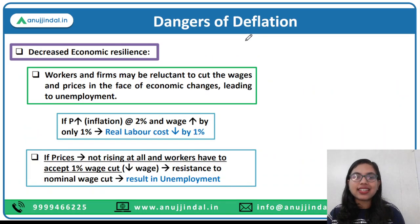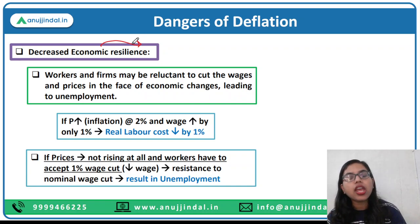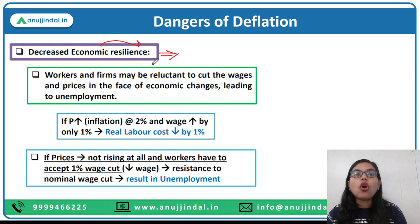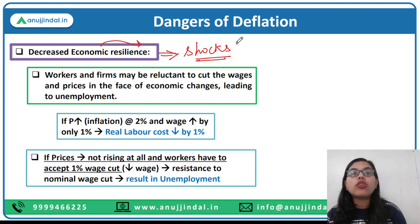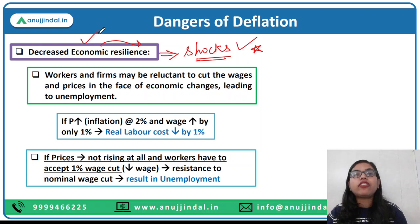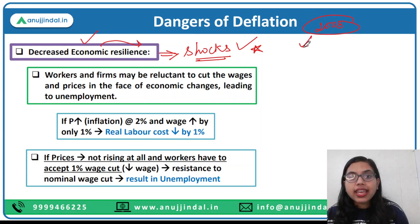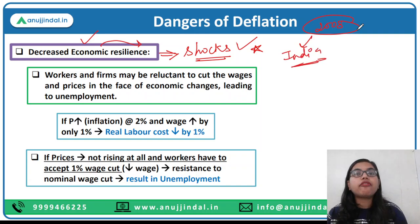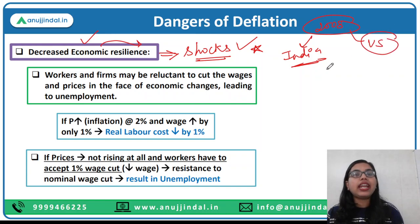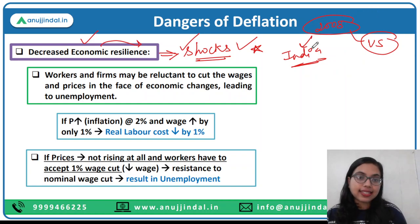Now let's move forward to the next danger of deflation: decreased economic resilience. Economic resilience refers to the ability of the country or its financial system to be resilient enough to face external economic shocks. For example, during the 2008 financial crisis, countries like India were more resilient — they faced less shock from the US crisis. The US was in a very vulnerable situation, but India was in a much better position to face the external shocks caused by the US financial crisis. That is economic resilience.